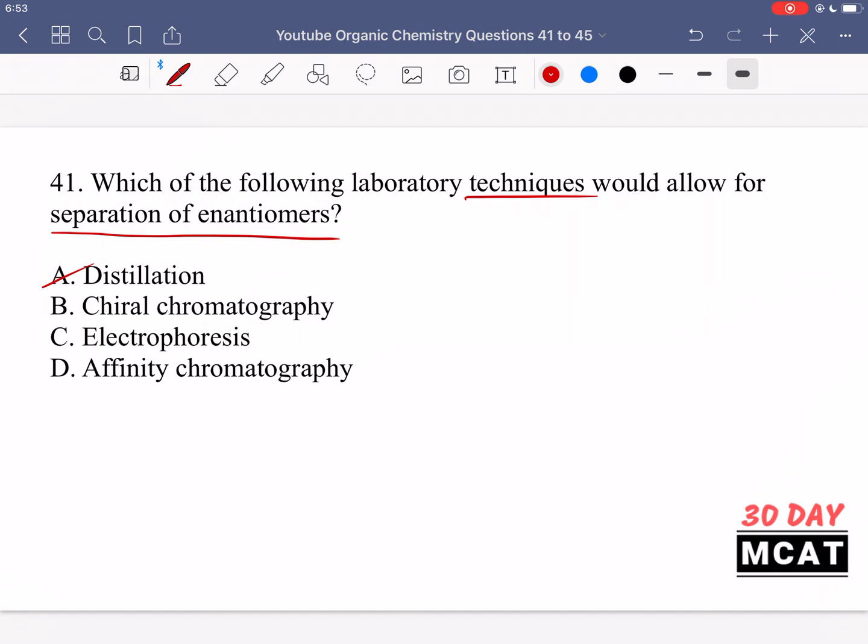Chiral chromatography, yes, that would be good. Chiral chromatography is a specific type of chromatography used for differentiating based on chirality, and this can actually separate enantiomers. You don't really have to know the theory behind this, but you just need to know that chiral chromatography is good for separating things based on chirality, which is the main thing that differs between enantiomers. So this is the correct answer.